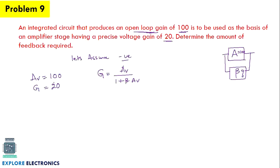Since the open loop gain is greater than the overall gain, this confirms it is a negative feedback configuration. For negative feedback, G equals Av divided by (1 + beta·Av), and here we need to find beta.